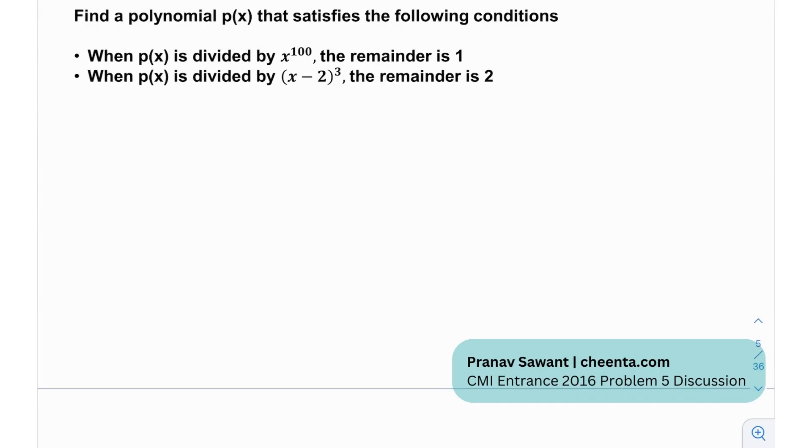So this is what they're telling us we need to find a polynomial p(x) that satisfies the following conditions when p of x is divided by x to the 100 the remainder is 1 and the second is that when p of x is divided by (x minus 2) cubed the remainder is 2.